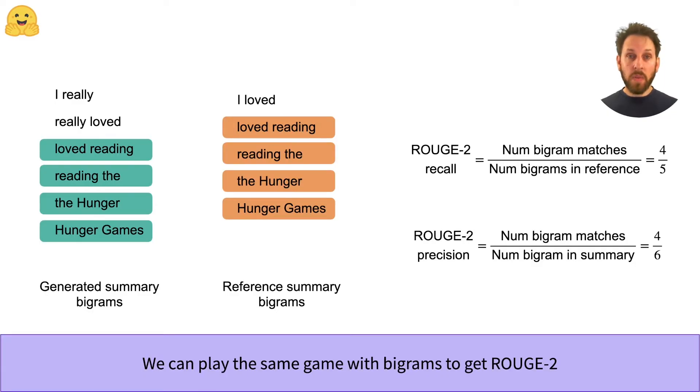Now, if the summaries are long, the ROUGE-2 scores will generally be small because there are fewer bigrams to match. And this is also true for abstractive summarization. So both ROUGE-1 and ROUGE-2 scores are usually reported.